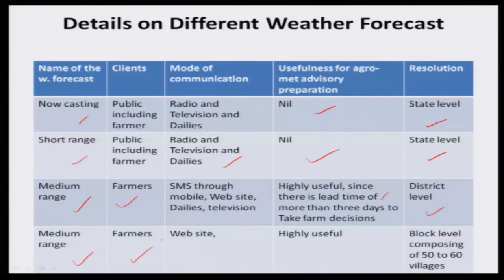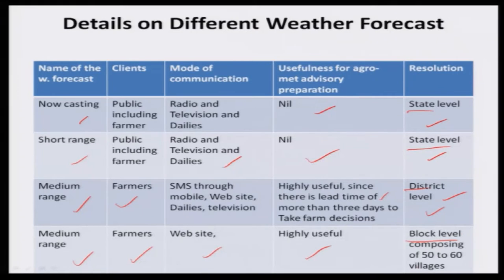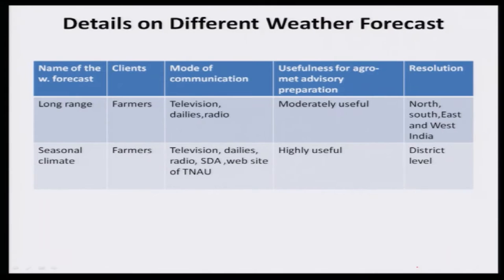The medium range forecast by Tamil Nadu Agricultural University is given to farmers via website, and is at the block level — covering only 50 to 60 villages — making it highly useful to farmers. They use the regional climate model. For long range forecast, it is highly useful for farmers — communicated via television, dailies, and radio — moderately useful for developing agro-advisory, covering north, south, east, and west India. The seasonal climate forecast is given by TNAU to farmers via television, dailies, state department of agriculture, website, and TNAU research stations. It is highly useful for preparing agro-advisories and is given at the district level.